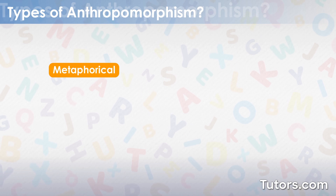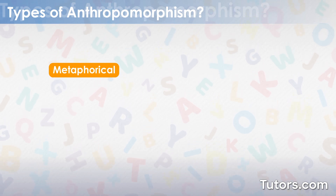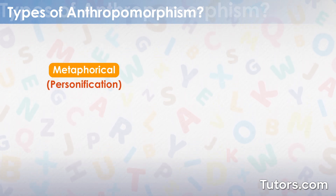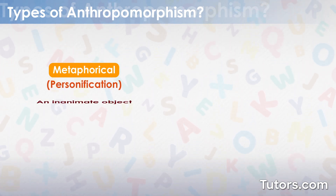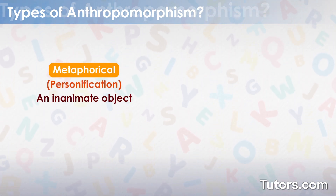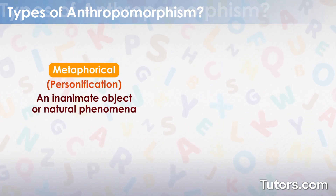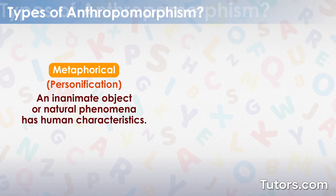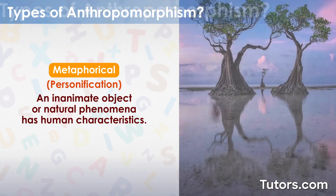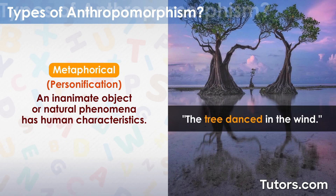Metaphorical anthropomorphism, also known as personification, occurs when an inanimate object or natural phenomenon has human characteristics. For example, the tree danced.